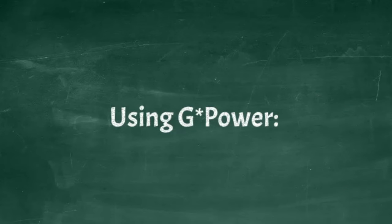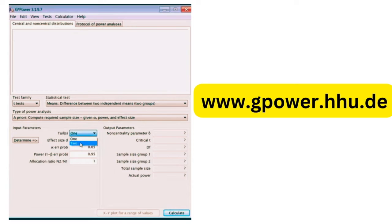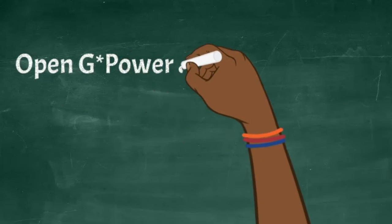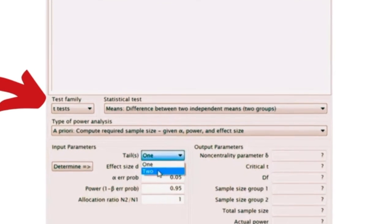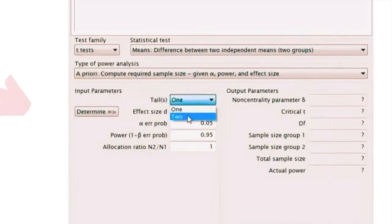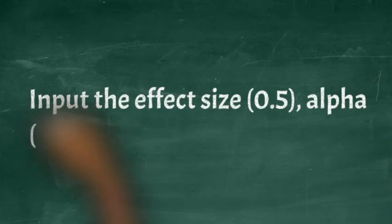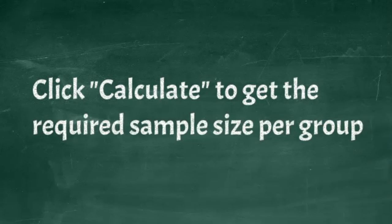So then using G-Power, you open G-Power. G-Power can be downloaded from gpower.hhu.de. You can download it for a Mac or Windows, and then once downloaded and it's installed, you can start to do the analysis. So you open G-Power and you select t-tests under tests and means, difference between two independent means, two groups. Then you input the effect size as 0.5, the alpha as 0.05, and the power as 0.8. Then click calculate to get the required sample size per group.